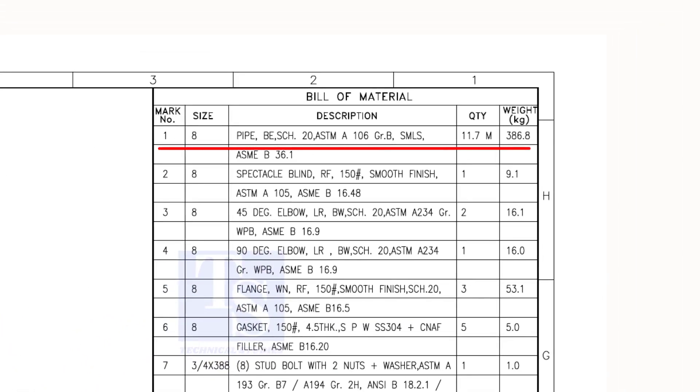As per the list, item number 1 is 8-inch bevel end schedule 20 seamless pipe. Item number 3 is 45-degree long radius butt weld schedule 20 elbow.